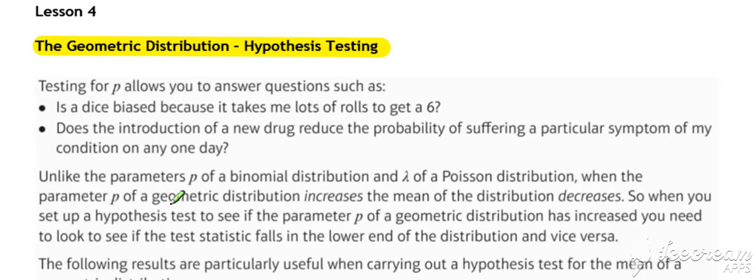But there is one particular thing that we need to be careful of and look out for, and that is that unlike the parameters p of a binomial and lambda of a Poisson, when the parameter p of a geometric distribution increases, the mean of the distribution decreases.